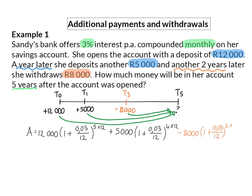The 8,000 rand would have received interest for two years' worth of months. Even though these three amounts are all in the same account, we can calculate their values at T5 separately — adding for extra deposits and subtracting for withdrawals. Using a calculator to determine this value all at once, Sandy has in her account an amount of 11,081 rand and 99 cents after five years.